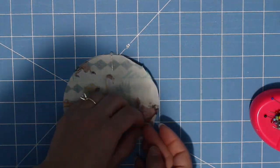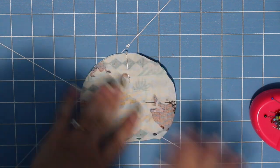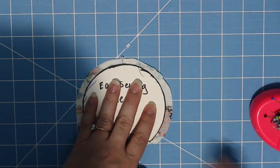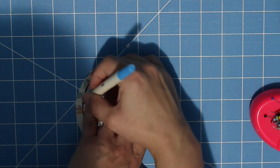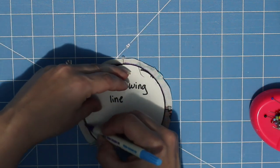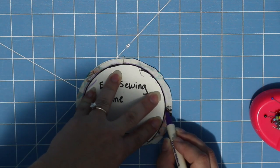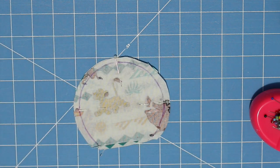Once you have your ears cut out, you're going to lay them down right sides together, which basically means the pretty part of the fabric together, and then you're going to go ahead and pin them in place. Right sides together, lay down the ear sewing line template and trace that onto your ear.